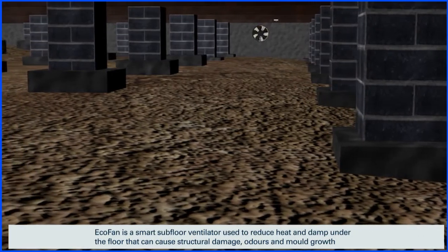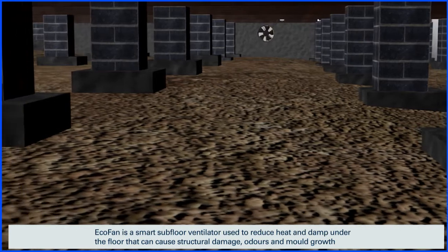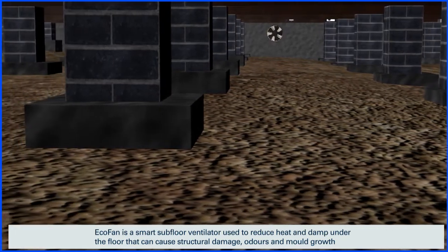ECOFAN is a smart subfloor ventilator used to reduce heat and damp under the floor that can cause structural damage, odours and mold growth.